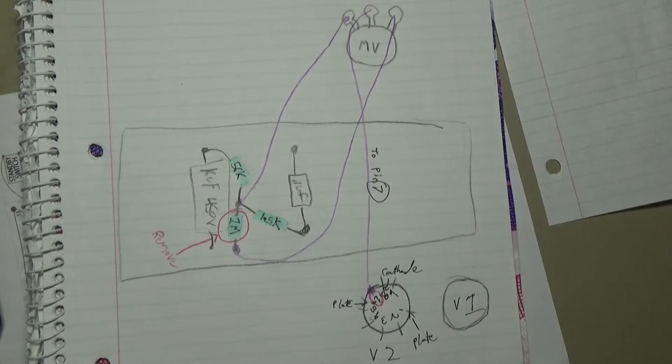Welcome back to Low Headroom. Today we're going to look at how to put a master volume into our 5E3 build. This is a pretty easy modification. I think the hardest part is going to be to ensure that we don't introduce any noise into the circuit, but I'm going to explain all that in just a second, so stick around.